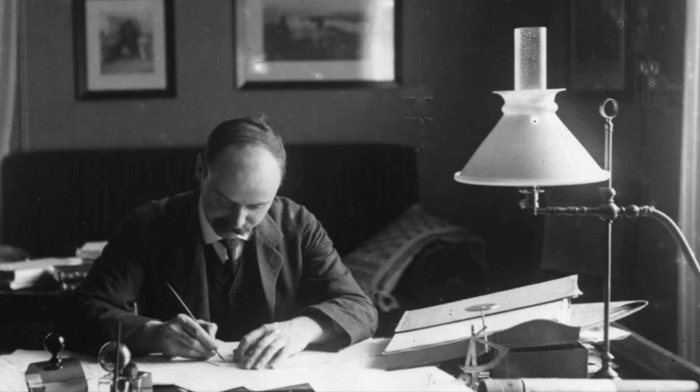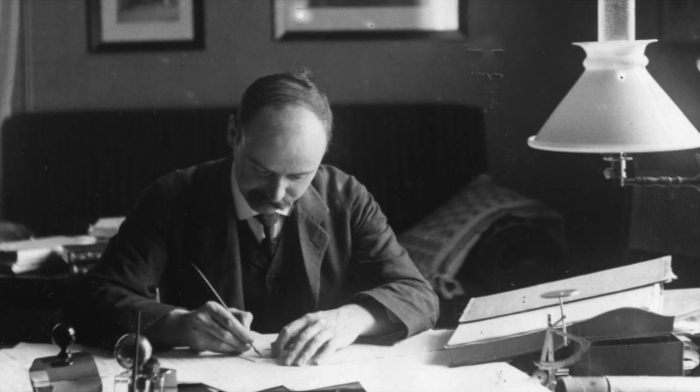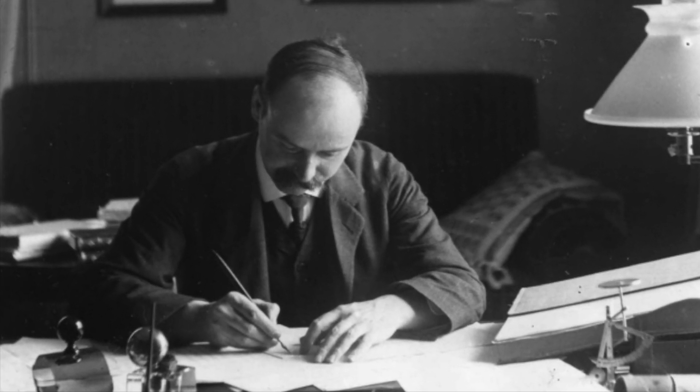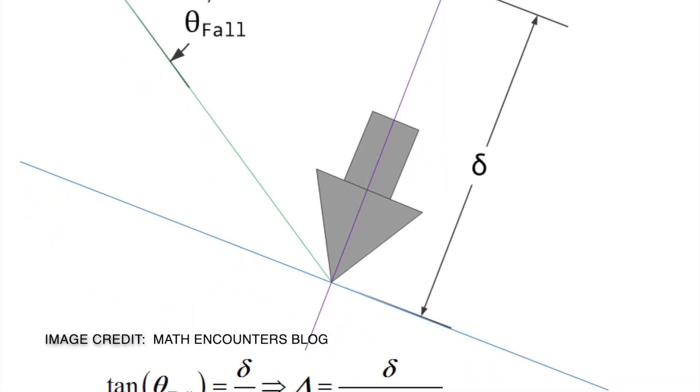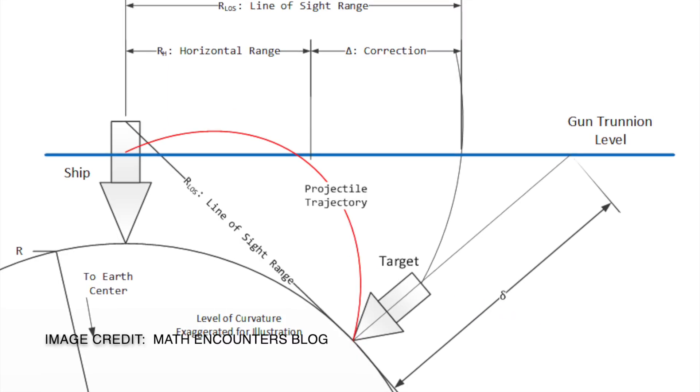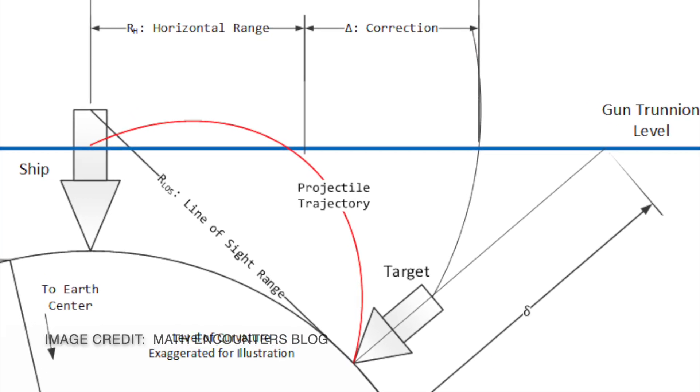As the war broke out in 1914, Schwarzschild, despite being over 40 years old and an established scientist, volunteered for military service in the German army. It was not uncommon for intellectuals of the time to enlist, believing that they had a duty to support their country. Schwarzschild was assigned to work on ballistic calculations and artillery trajectory modeling, using his deep understanding of physics and mathematics to improve the accuracy of long-range weapons.